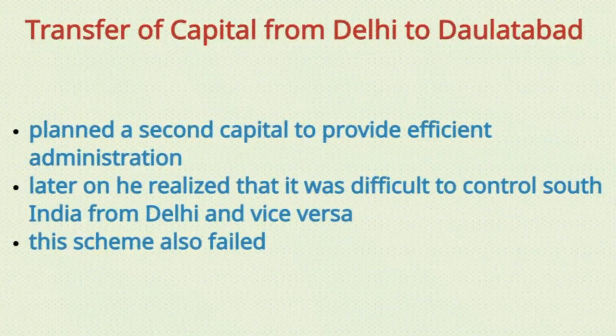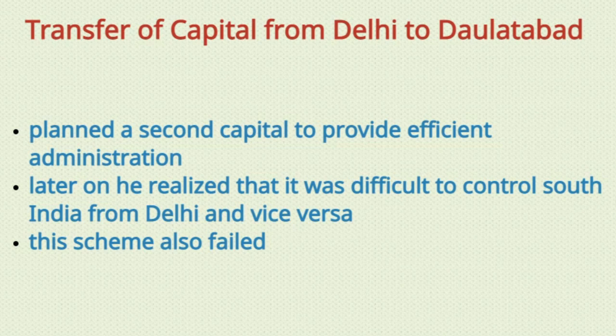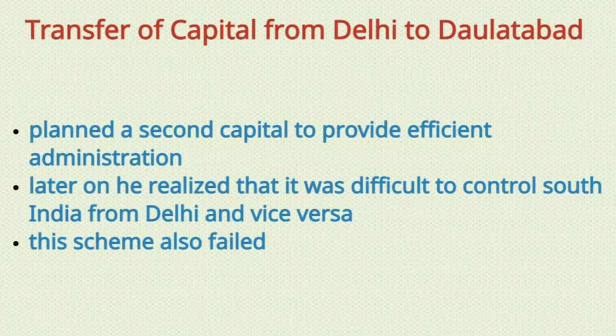The next scheme was the transfer of capital. Muhammad bin Tughlaq transferred the capital from Delhi to Devgiri, which was renamed Dalitabad. The people were ordered to move from Delhi to Dalitabad. Though many arrangements were made for a convenient and comfortable journey, the people did not like the long and hard journey. Many died on the way, and the people could not adjust to the new climate and environment of Dalitabad. Thus, this scheme of the Sultan also failed.